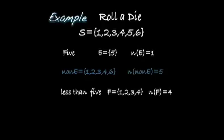Notice that 1 plus 5 is 6. If you consider the event of rolling a number less than 5, F has all the outcomes less than 5: 1, 2, 3, 4. There are 4 outcomes smaller than 5. The complement of F is the outcomes not in F, namely 5 and 6. There are 2 outcomes in the complement of F, so 4 plus 2 also equals 6, the total in the sample space.